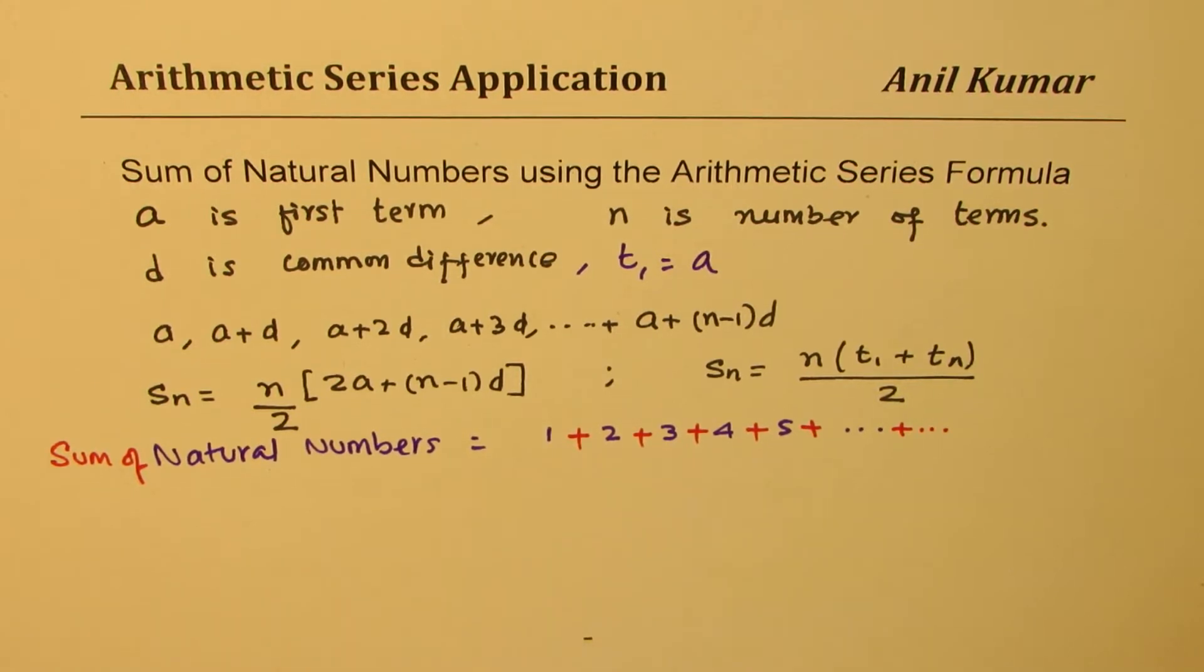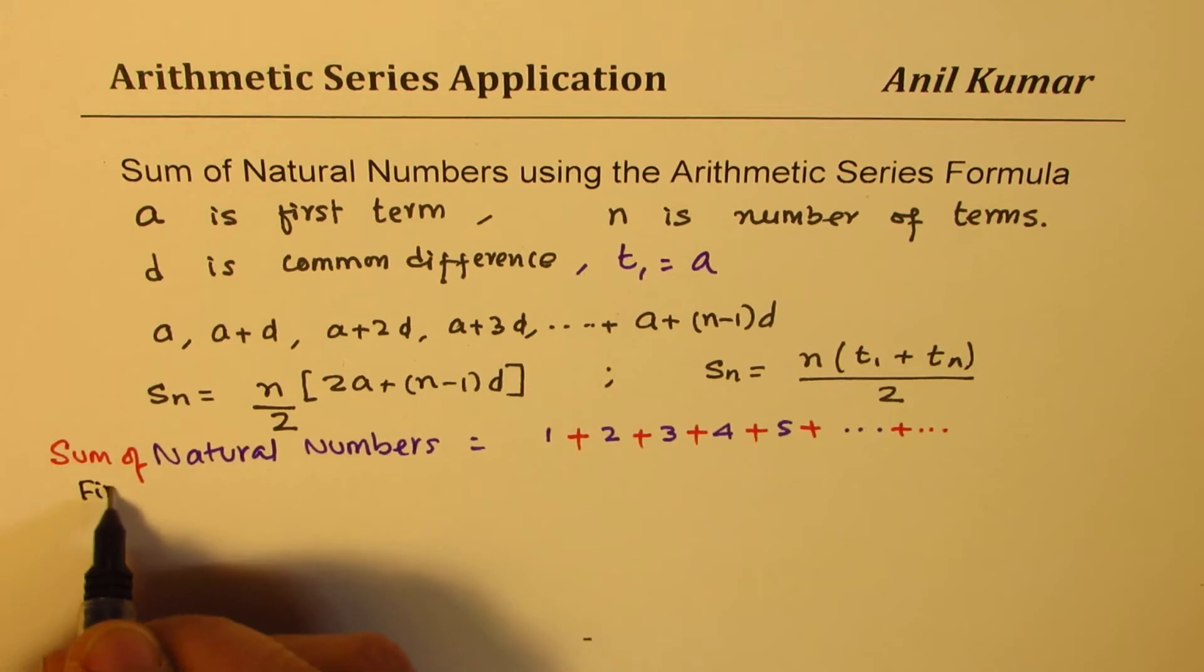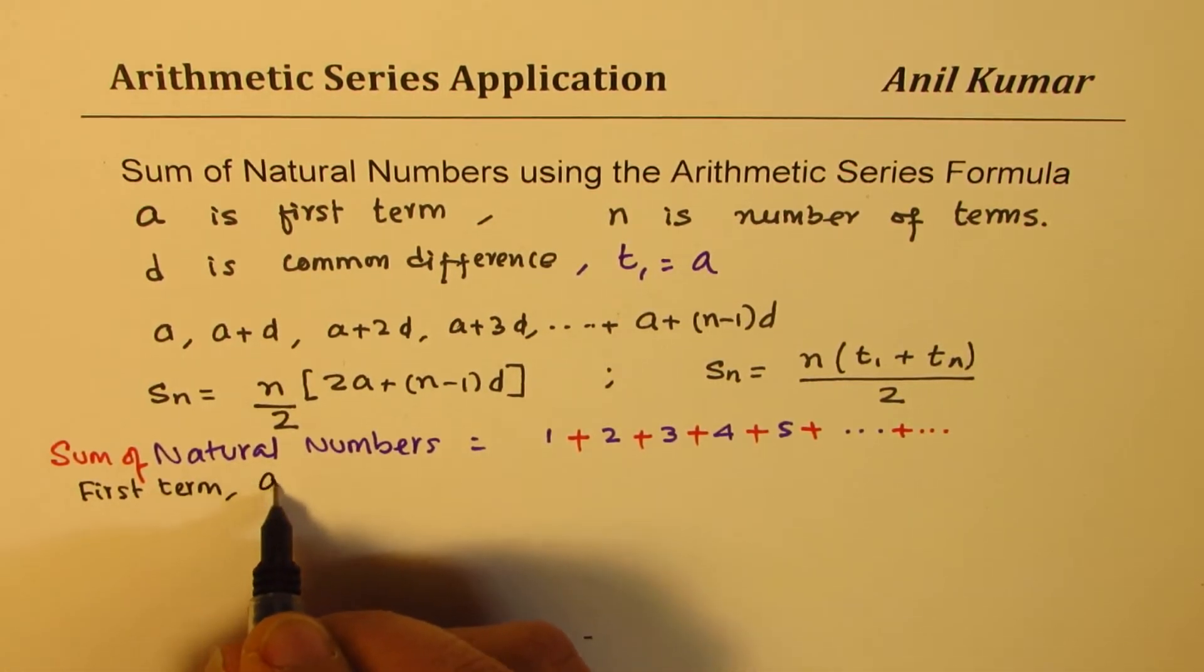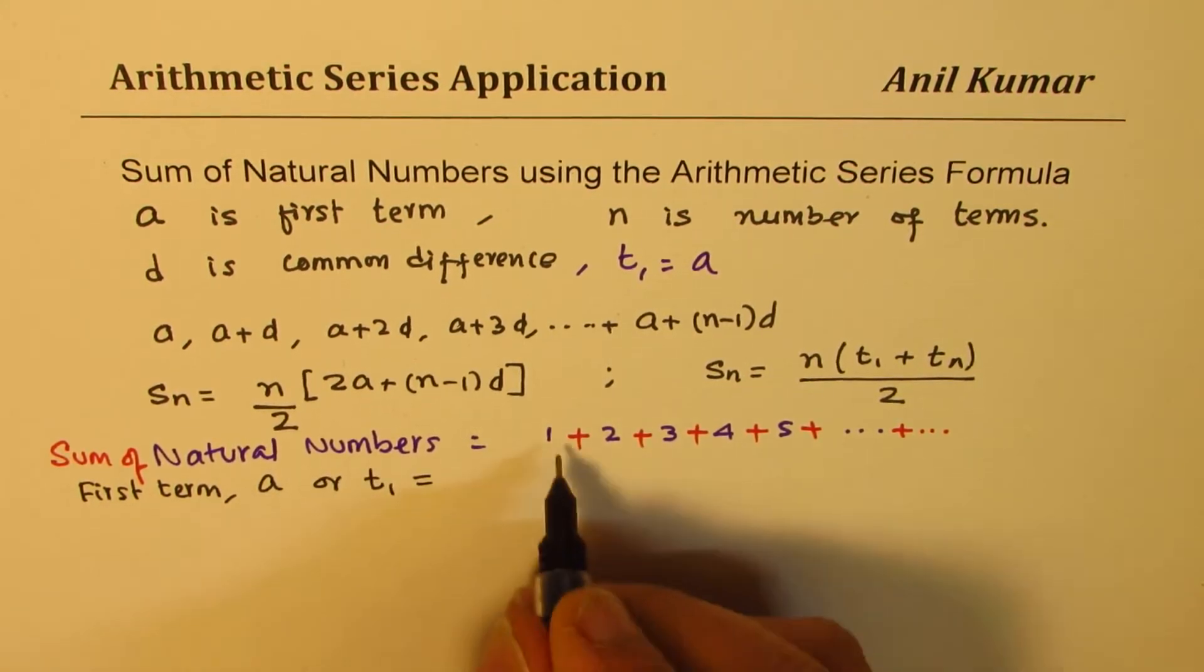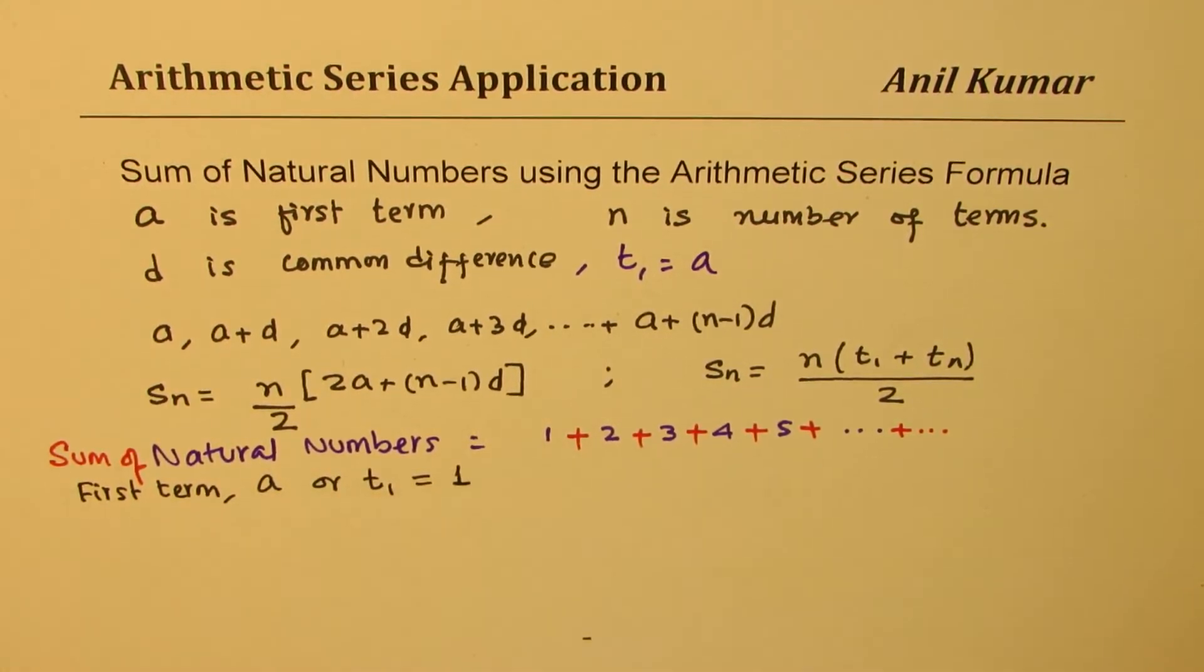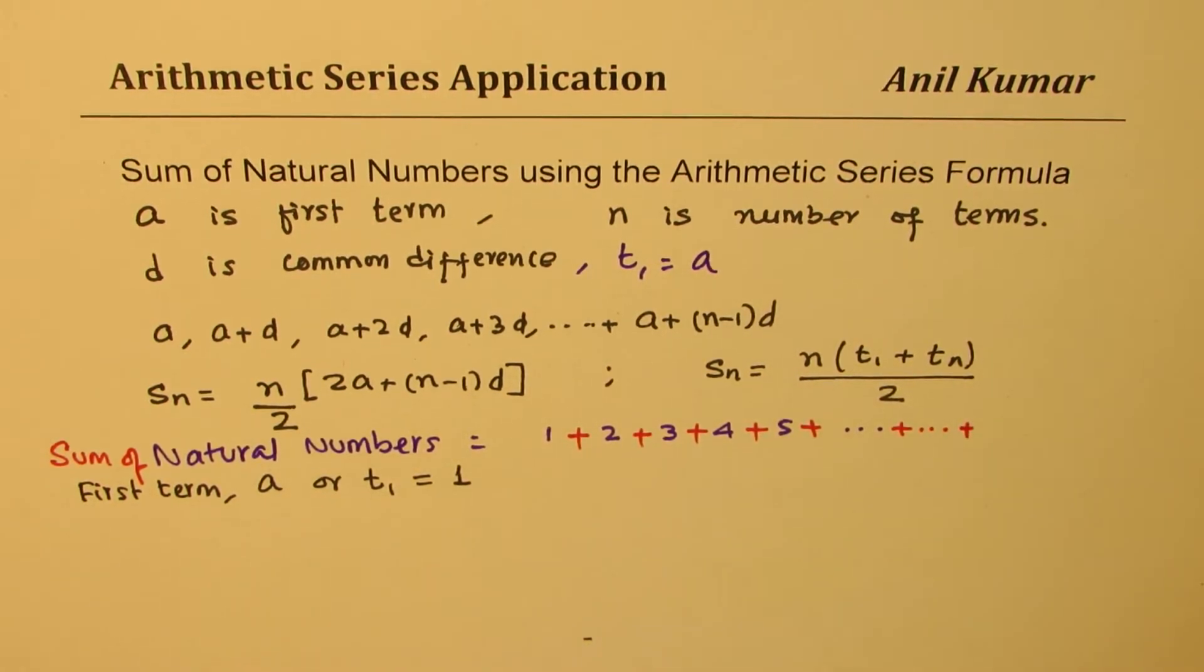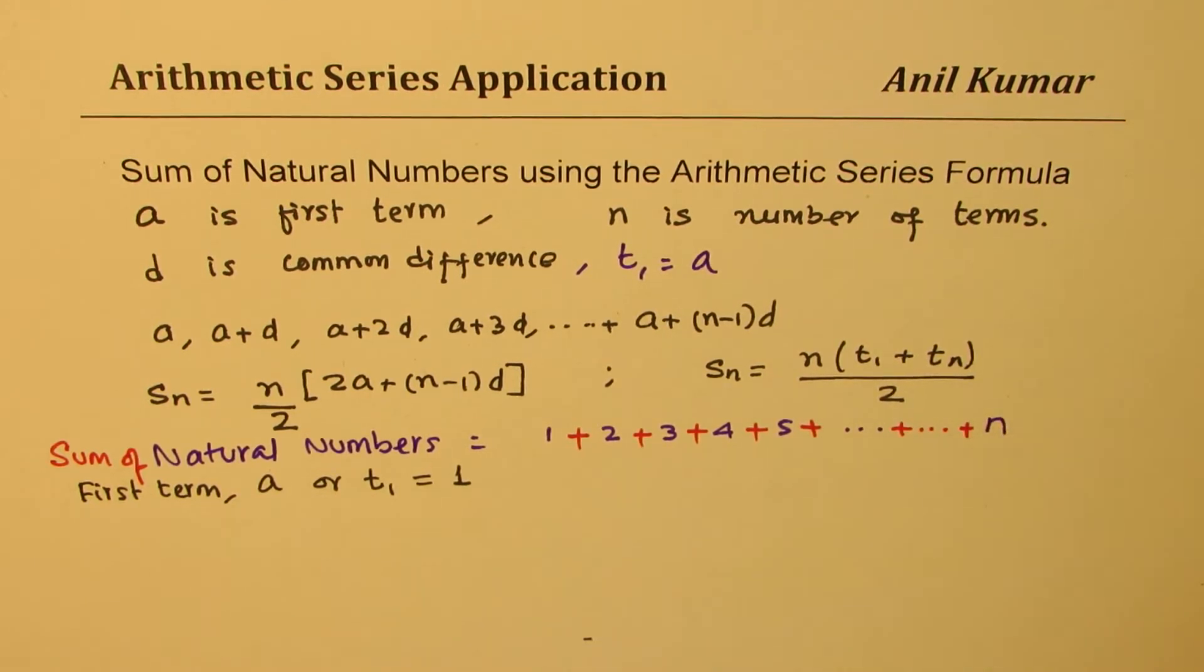Now here in this series, what do you notice? The first term, which you may say A or you can say T1, is equal to 1. Now we are saying that sum of natural numbers up to n. So we'll kind of complete this series and write the last number as n. So we have n terms.